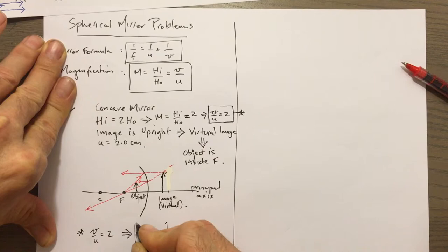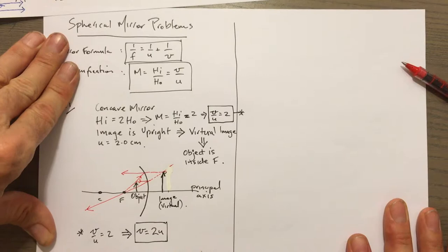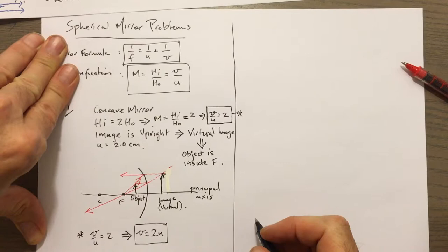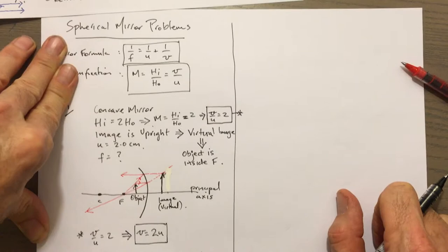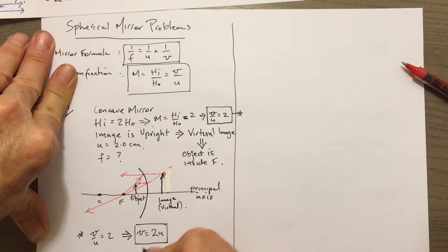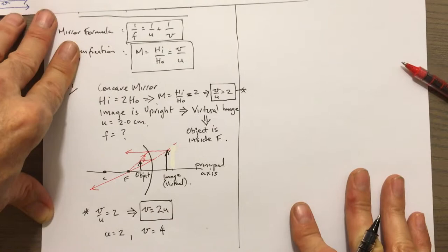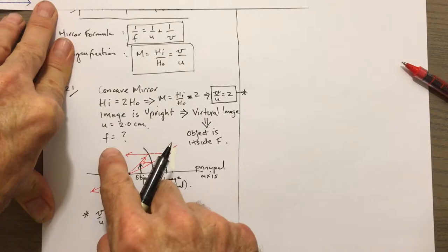We're not given the focal length — that's what we need to find. But we do have U. If U is equal to 2 centimetres, then V equals 2 lots of U, which is 4 centimetres. So we have both U and V, and F is all we need to find — we go straight to the mirror formula.